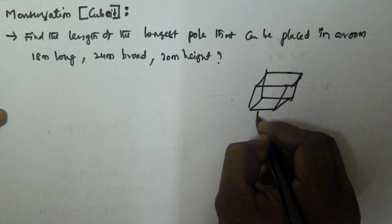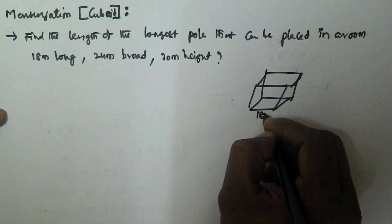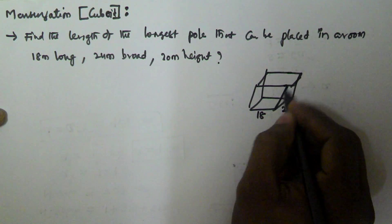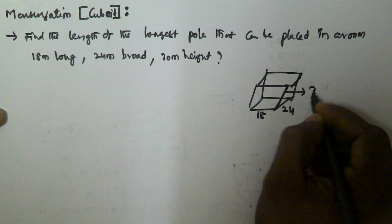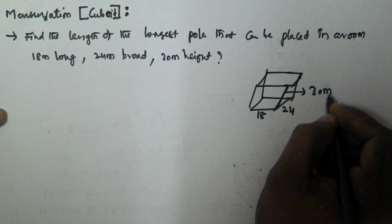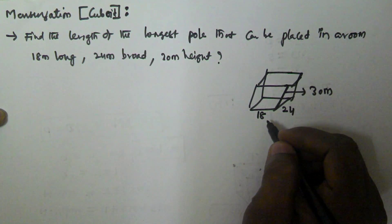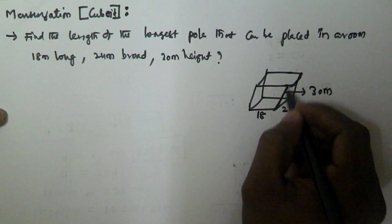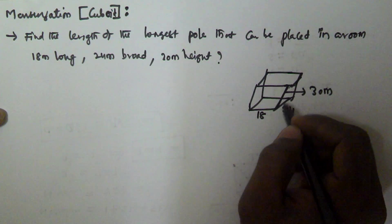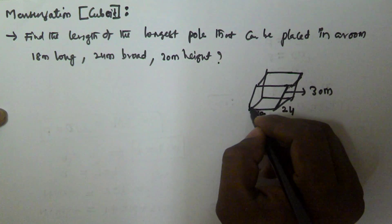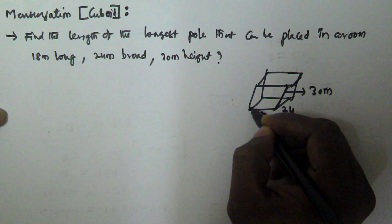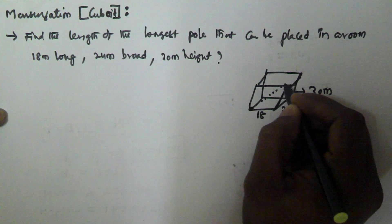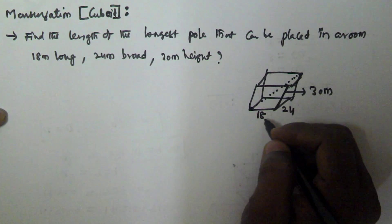The length is given as 18 meter, the breadth is given as 24, and the height is given as 30 meter. So we have to find the longest pool that can fit into this room. The longest pool that can fit into this room is going to be equal to the length of the diagonal, because the diagonal is actually the longest length in the given room.